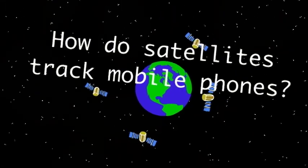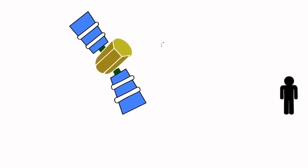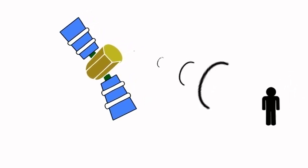How do satellites track mobile phones? Well, that's kind of a trick question because satellites don't really track your location. They simply stream information to your phone.